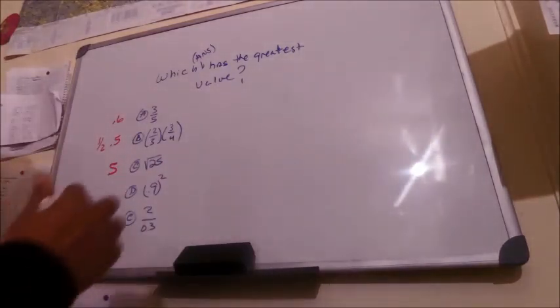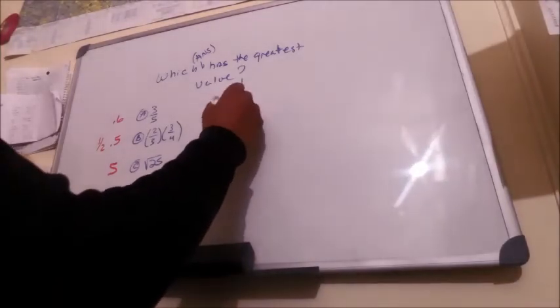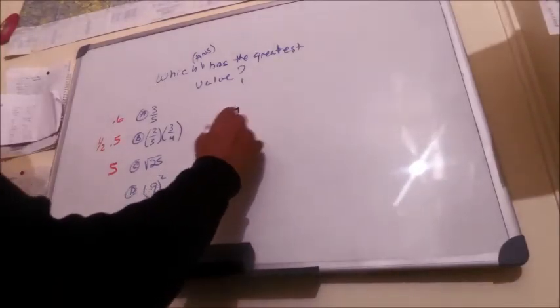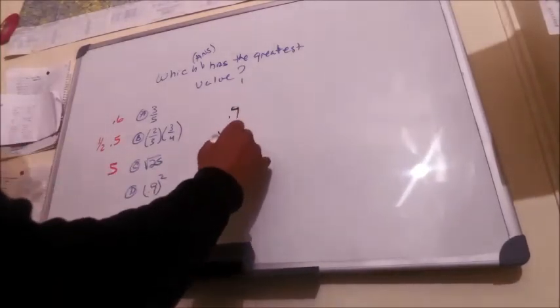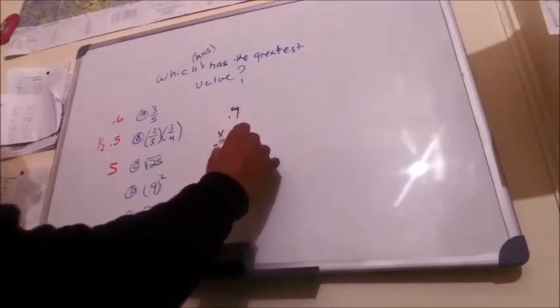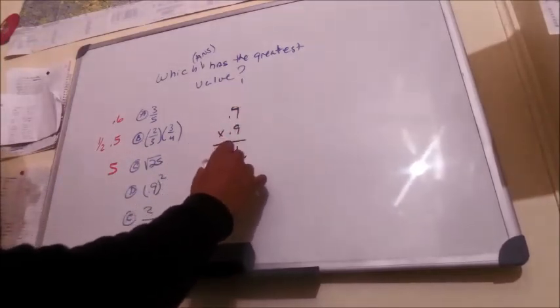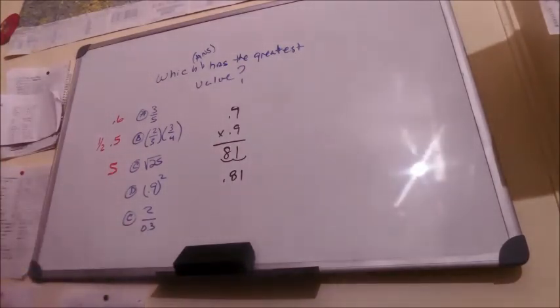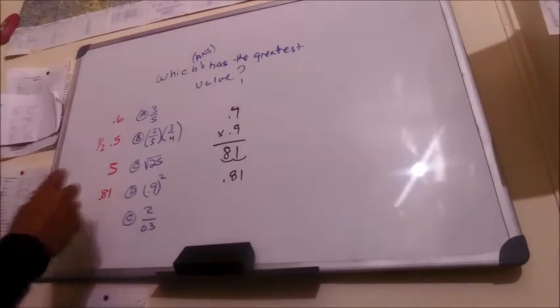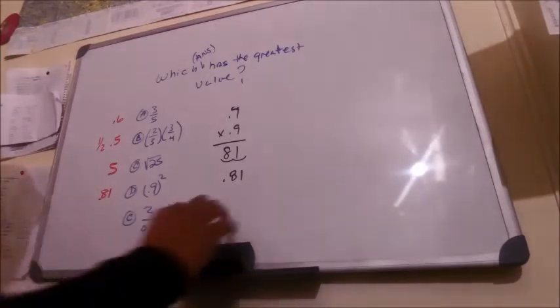D: 0.9 times 0.9. 9 times 9 is 81. We have two decimal places, so we have to come over—bang, bang. So our answer is 0.81.